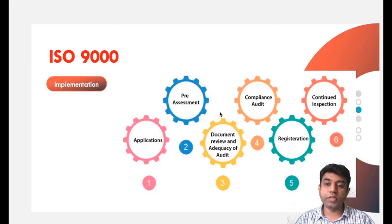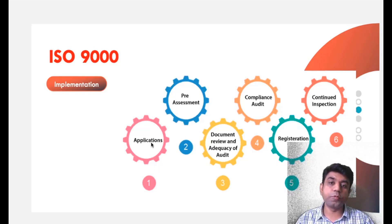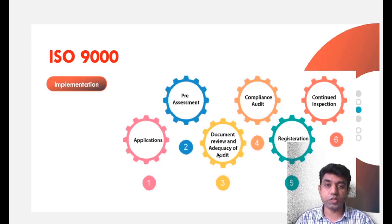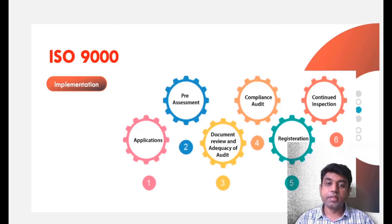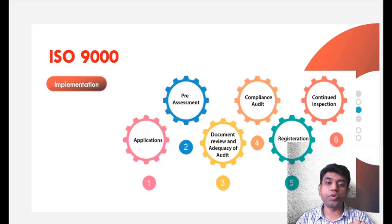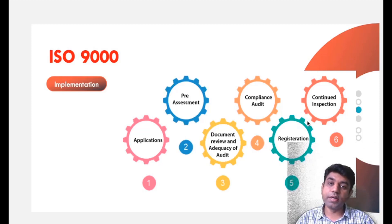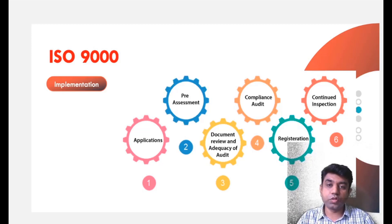If a company wants an ISO 9001 certificate, the procedure is: first, they apply to an organization that provides ISO certification. Then that organization does a pre-assessment and checks the submitted documents. Next, a compliance audit is conducted to verify that all requirements in ISO 9001 are met by the company. If everything matches, the company is registered under ISO 9001 and issued a certificate. Continuous inspection is also required, because receiving the certification does not mean quality maintenance can be neglected.